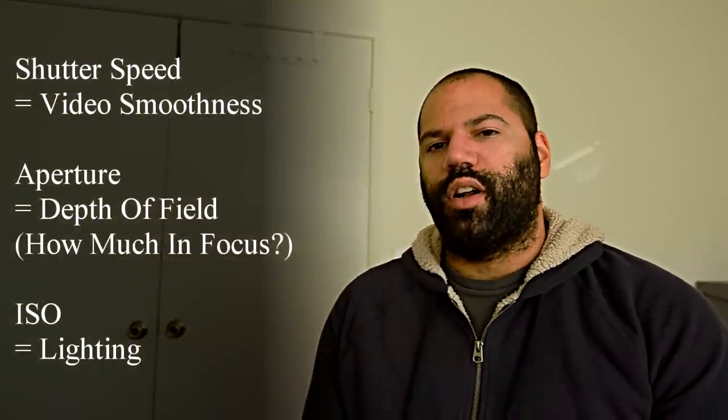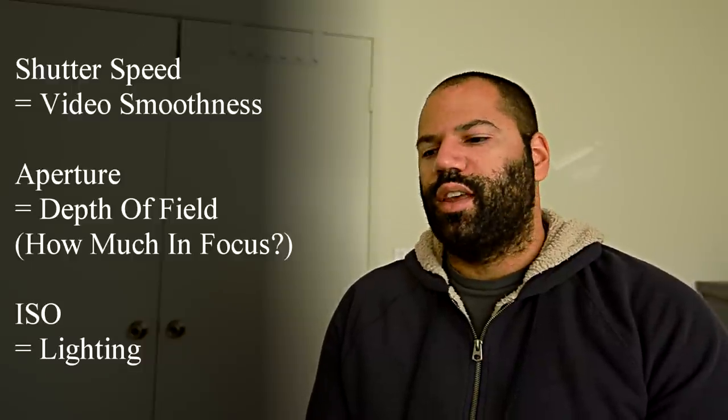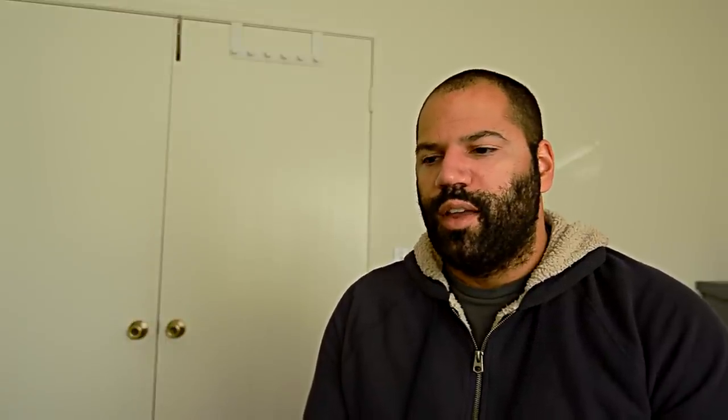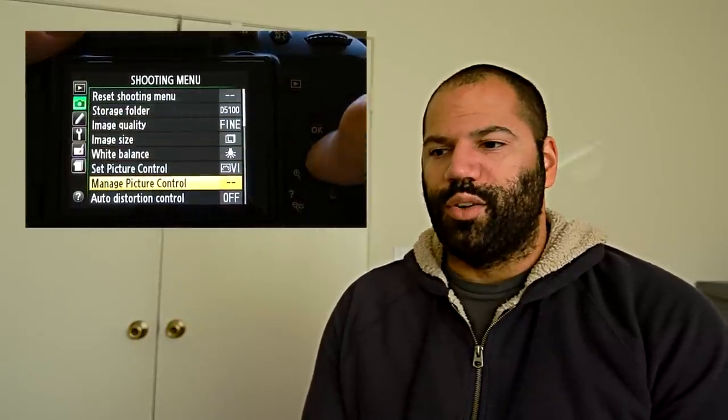As for shutter speed, aperture, and ISO, there are already a lot of videos touching on this and it's no different for the Nikon. You should be able to get a good grasp on how to set the auto mode by setting the auto ISO. You also have to remember that when you're shooting video with a DSLR, it's not like a camcorder where you can just pick it up and go — you really have to sit down and plan out what you're going to do. Another important thing is a good, sturdy tripod.